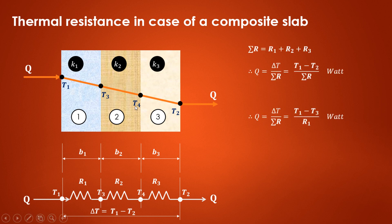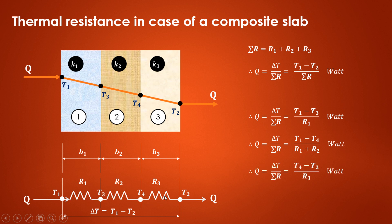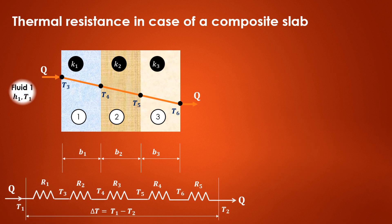Using this concept we can find out the interface temperatures T3 and T4. If we consider the temperature difference T1 minus T3, then in the denominator we consider only resistance R1. For T1 minus T4, we consider two resistances R1 plus R2. If we consider the temperature difference T4 minus T2, we take only resistance R3. Since it is steady state heat conduction, Q remains the same in all cases.